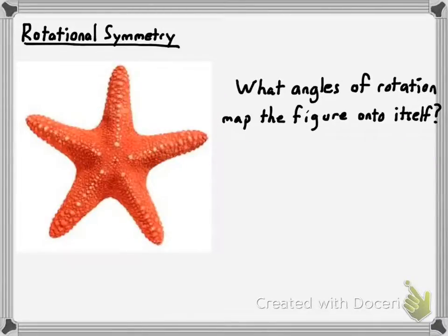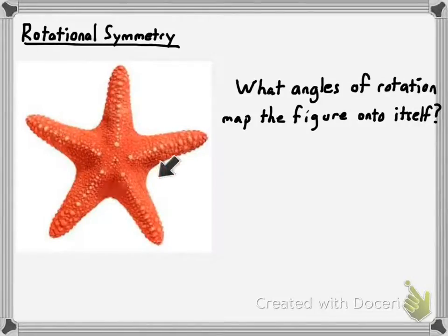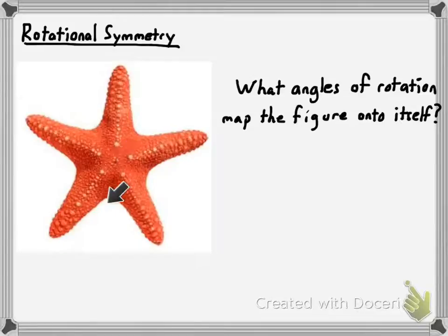I showed you the starfish earlier and said it had line symmetry, and it also has rotational symmetry. It has five congruent sections just like that flower, so angles of 72 degrees and 144 degrees would map it onto itself. It's worth mentioning that a figure can have both line symmetry and rotational symmetry, although it doesn't have to have both — it can just have one or the other.